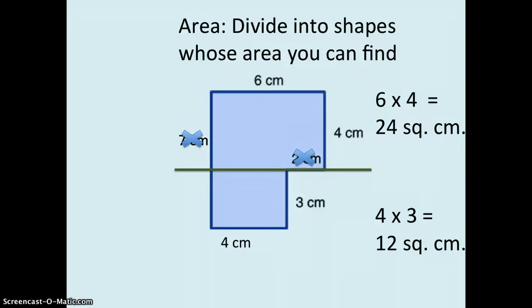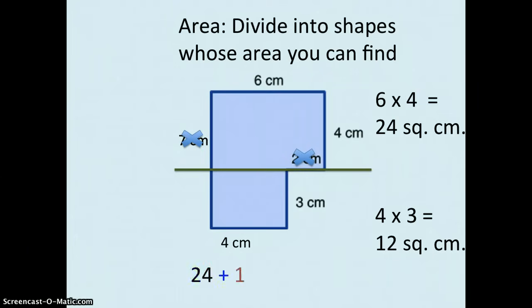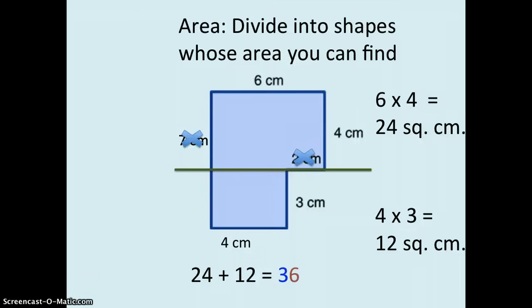But we're not finished yet because we need to find the area of the whole shape. To do that, we need to add up our two smaller rectangles. So 24 square centimeters plus 12 equals 36 square centimeters.